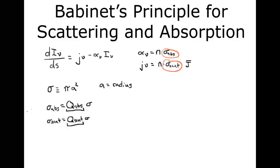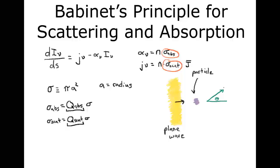Now let's do a thought experiment. Suppose we have background light as a plane wave propagating in one direction, and we introduce our scatterer or absorber. As a function of angle, we want to know how much of this incoming radiation gets past the particle and ends up on a screen that's effectively very far away — far enough that we can neglect the curvature of the wave front coming off the particle, what some people call the far field.